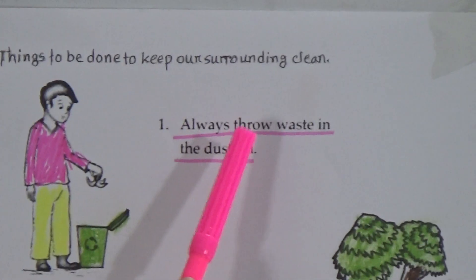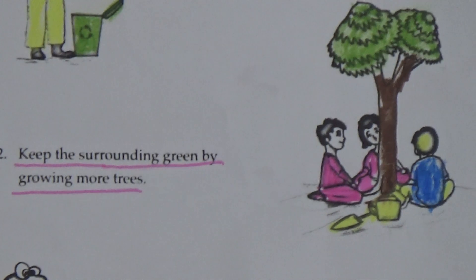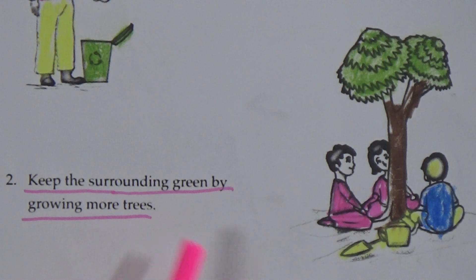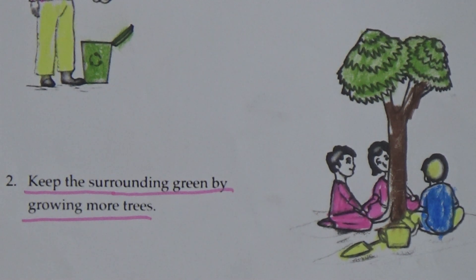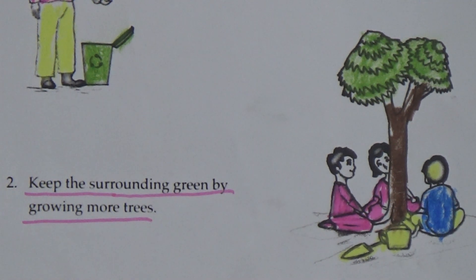Things to be done to keep our surrounding clean: number one, always throw waste in the dustbin — not here and there; number two, keep the surrounding green by growing more trees. Hope you have understood today's topic. Dear students, memorize these questions and answers and practice at home. Stay home, stay safe. Allah peace.